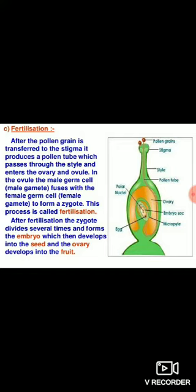This is known as triple fusion because there is a fusion of three cells together, and this fusion leads to the formation of endosperm. So the first fusion, which is syngamy, leads to the formation of zygote, and the second fusion, that is triple fusion, leads to the formation of endosperm, which is mainly responsible for providing nourishment to the developing embryo.